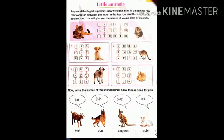Little Animals. Say loudly the English alphabet. Now, write the letter in the middle row that comes in between the letter in the top row and the letter in the bottom row. This will give you the names of young ones of animals. Let's begin.